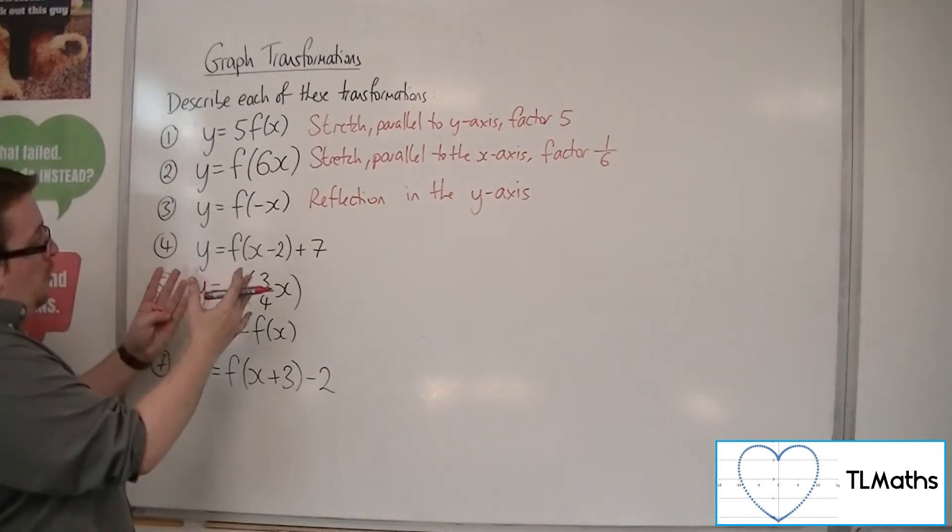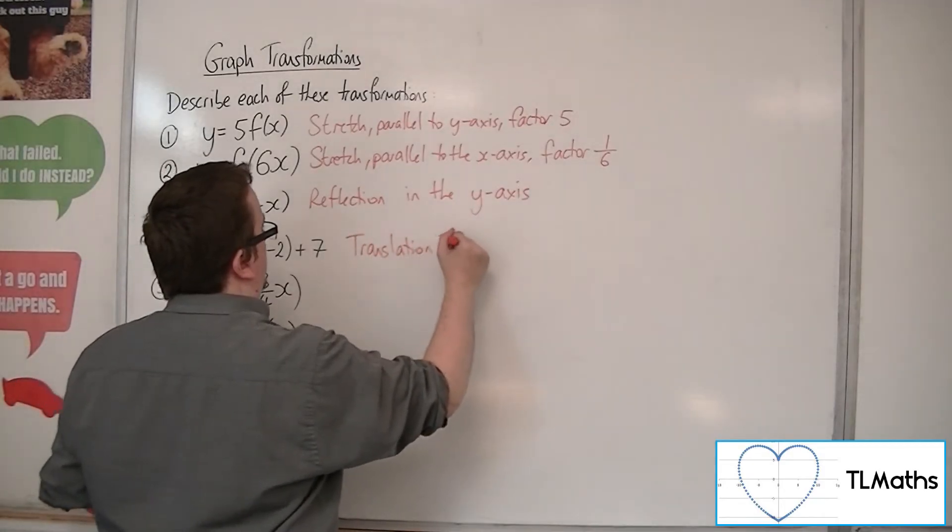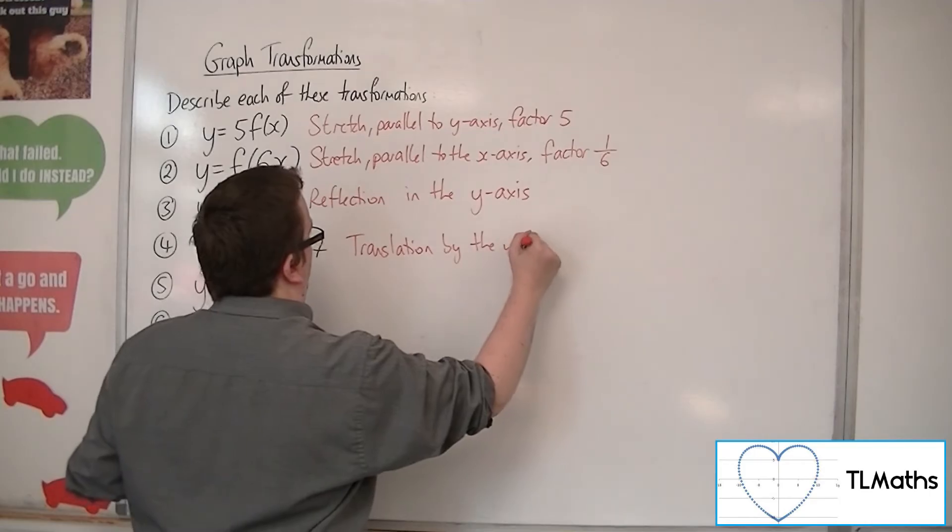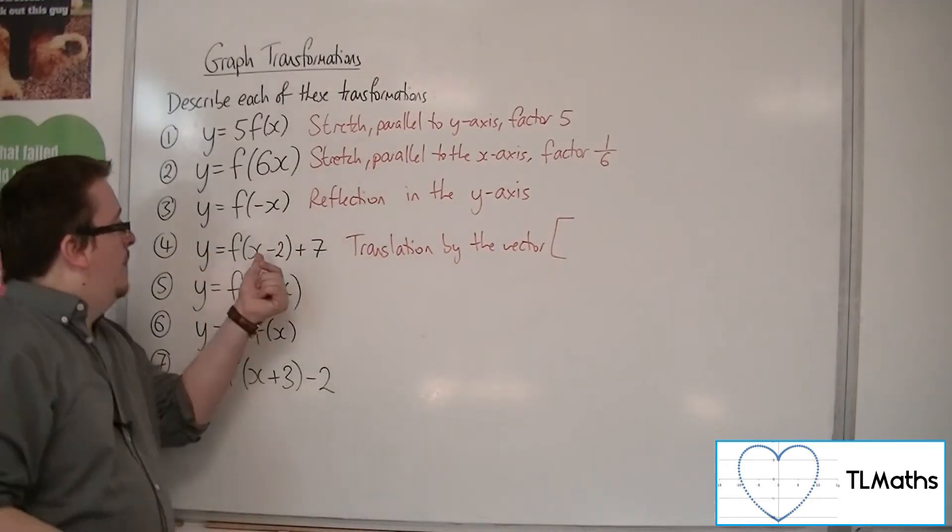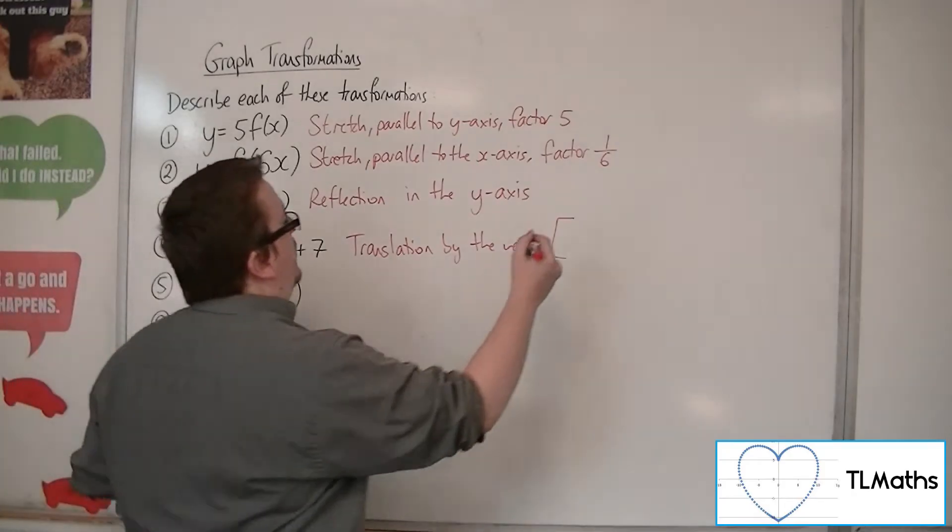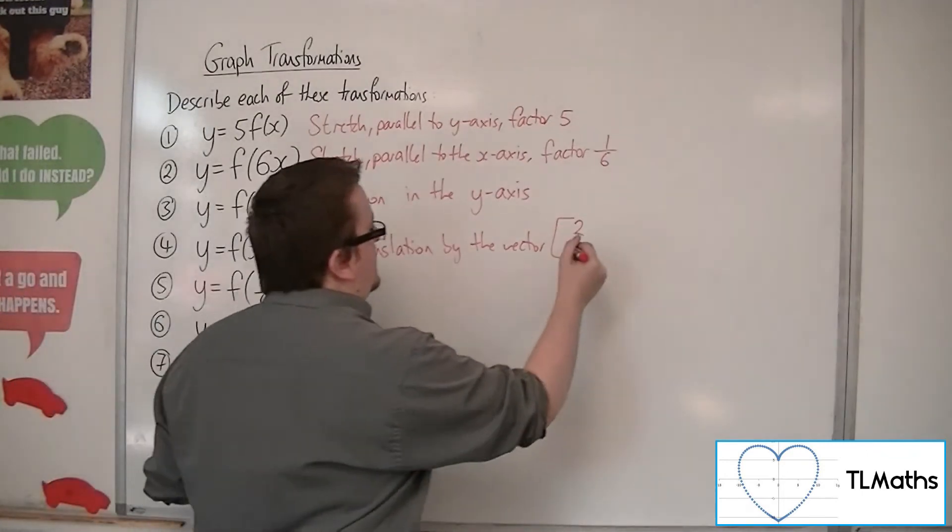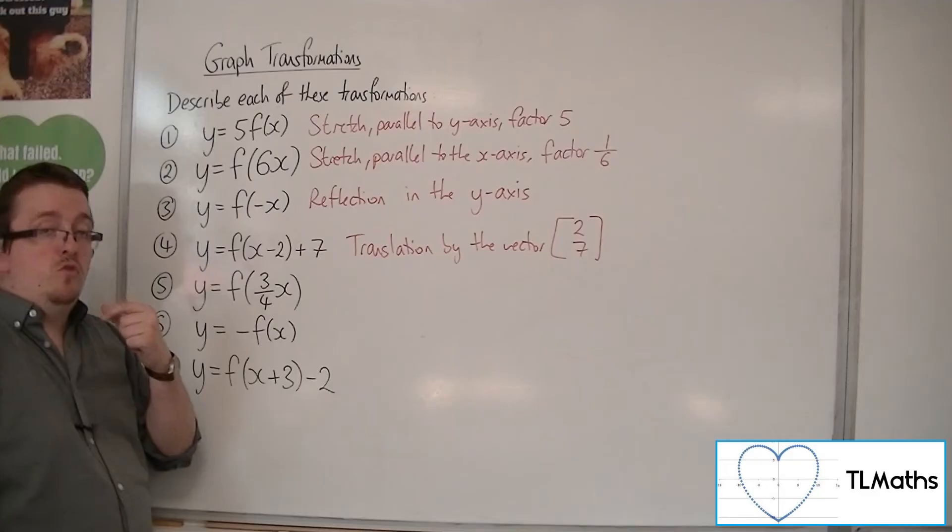For number four, this is a translation. What is the vector? The number inside the bracket changes to positive 2. The one outside stays the same, in much the same way as you would read the coordinates of the vertex of a parabola.